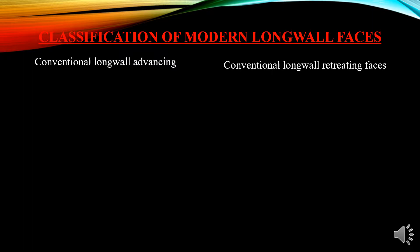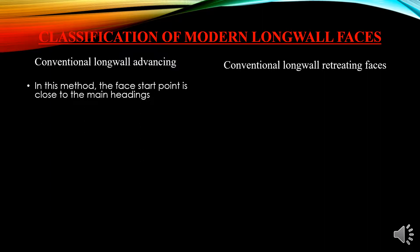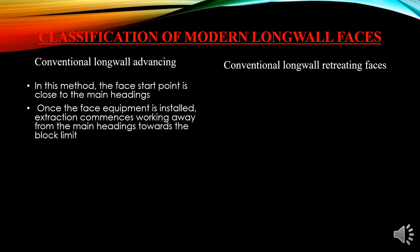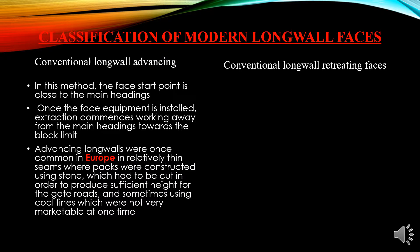Longwall phases are generally classified into two types: conventional longwall advancing and conventional longwall retreating. We will generally discuss the conventional longwall advancing method. In this method, the starting point is close to the heading. Once the face equipment is installed, extraction can be started toward the block limit. This is generally favored in Europe because of relatively thin seams and the waste can be easily packed with stone.